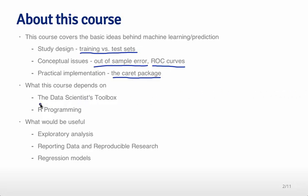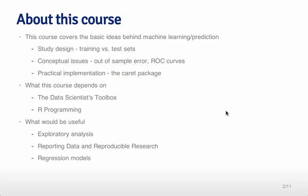This course depends quite heavily on the tools you've learned in the Data Scientist's Toolbox and in R Programming, so if you haven't taken those classes already they're highly encouraged before taking this class. It would also be useful if you've taken Exploratory Data Analysis, Reproducible Research, and Regression Models. Those classes aren't required, but a lot of the material we'll cover will be related to that material, so if you've seen it before it might be a little bit easier.